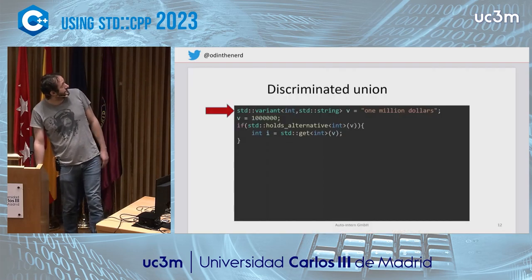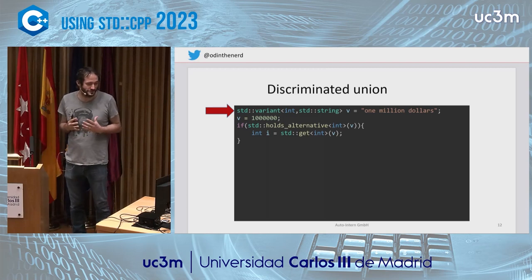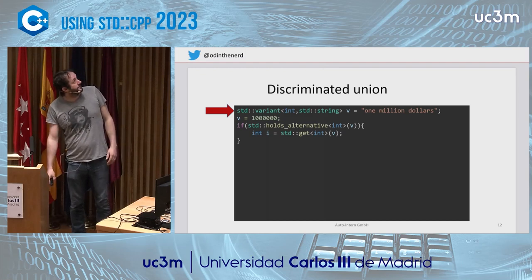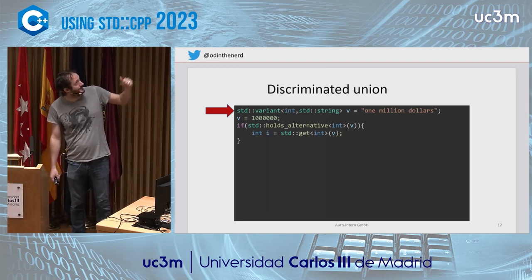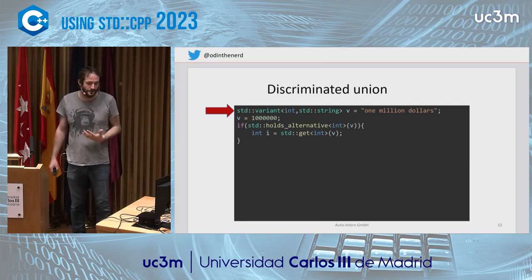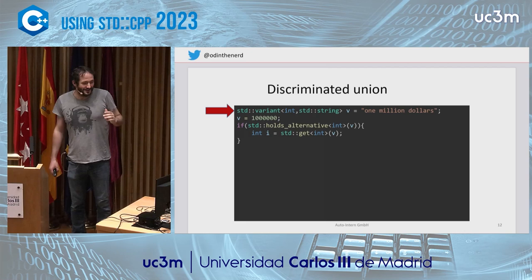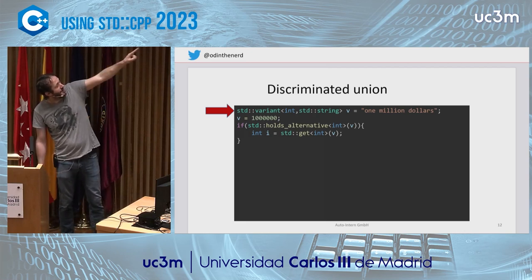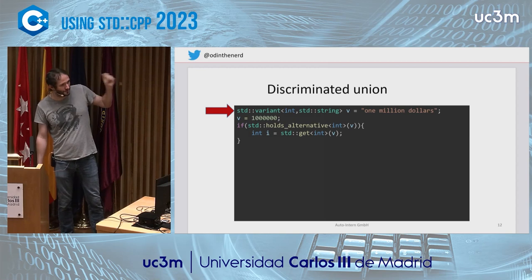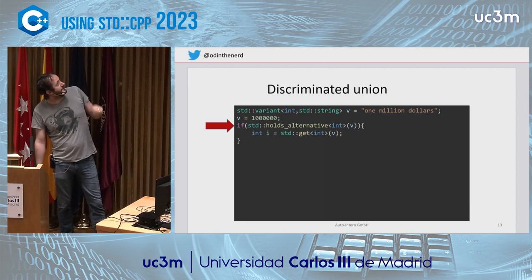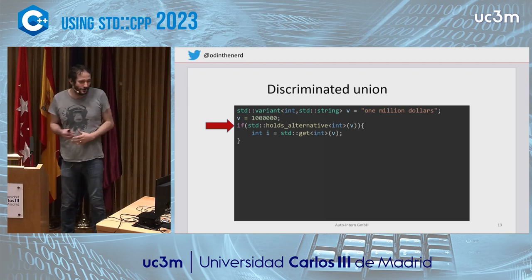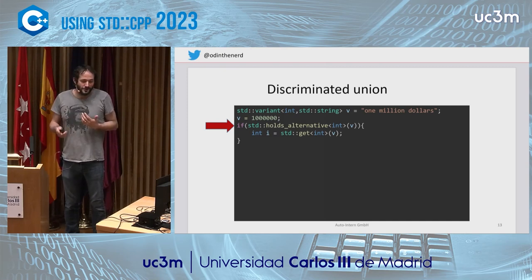What we want is a discriminated union. This is a C++17 feature: std::variant. The angle bracket type at the top means it's either an int or a string. We're better than the union now because we have templates. A const char* is convertible to a string rather than to an int, so the first line gives us a string and the second holds an int. Then we can test: do you hold a string, do you hold an int? Now we're type safe.